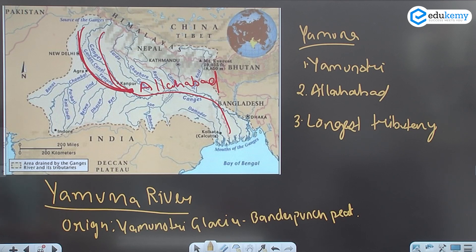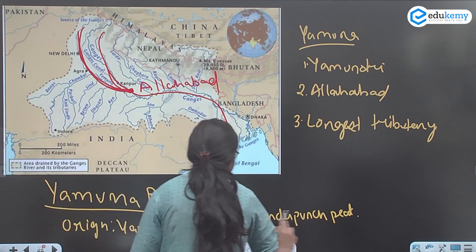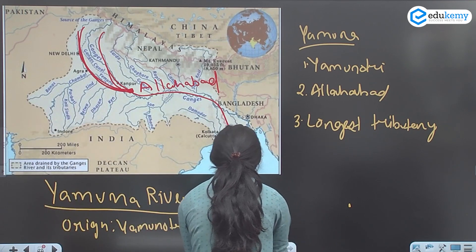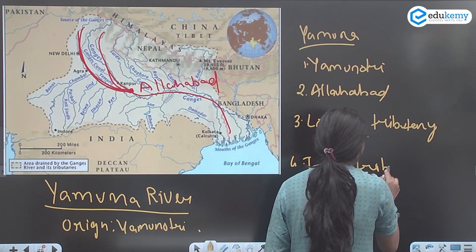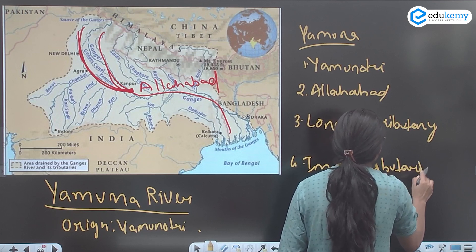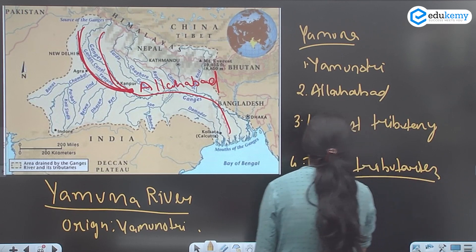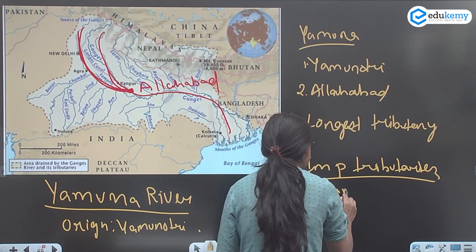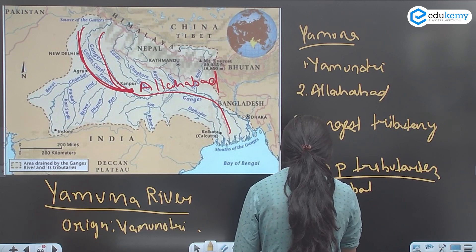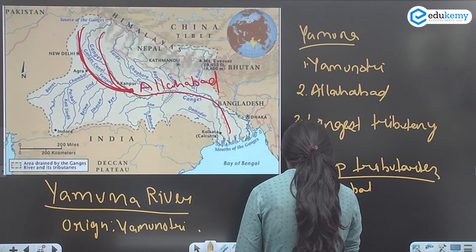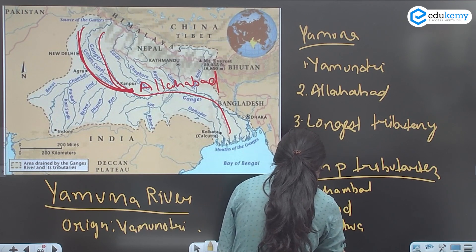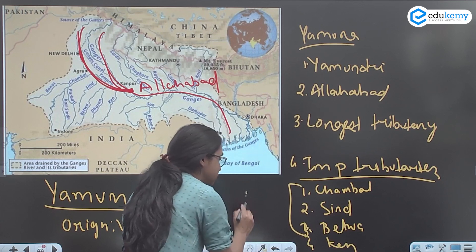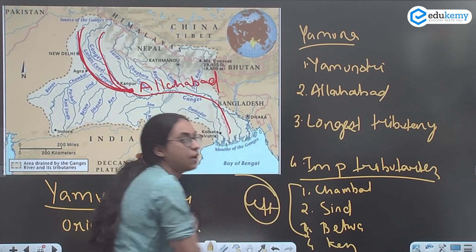The important tributaries of Yamuna include Chambal, Sindh, Betwa, and Kain. These are the left bank tributaries of Yamuna.